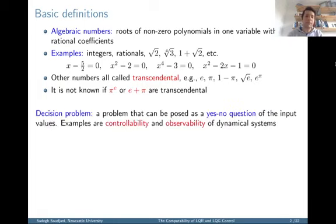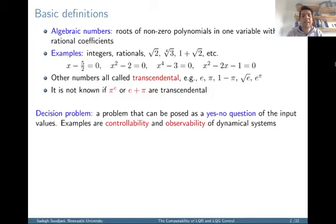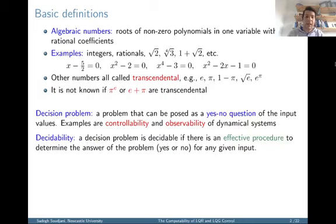Another point I want to discuss is the definition of a decision problem. A decision problem is a problem that can be posed as a yes-no question of the input values. Examples of decision problems include controllability and observability of dynamical systems, because in controllability we ask whether a given dynamical system is controllable or not — the same for observability, so it is a yes-no question. When we talk about decidability we mean whether there is an effective procedure to determine the answer for any given input.